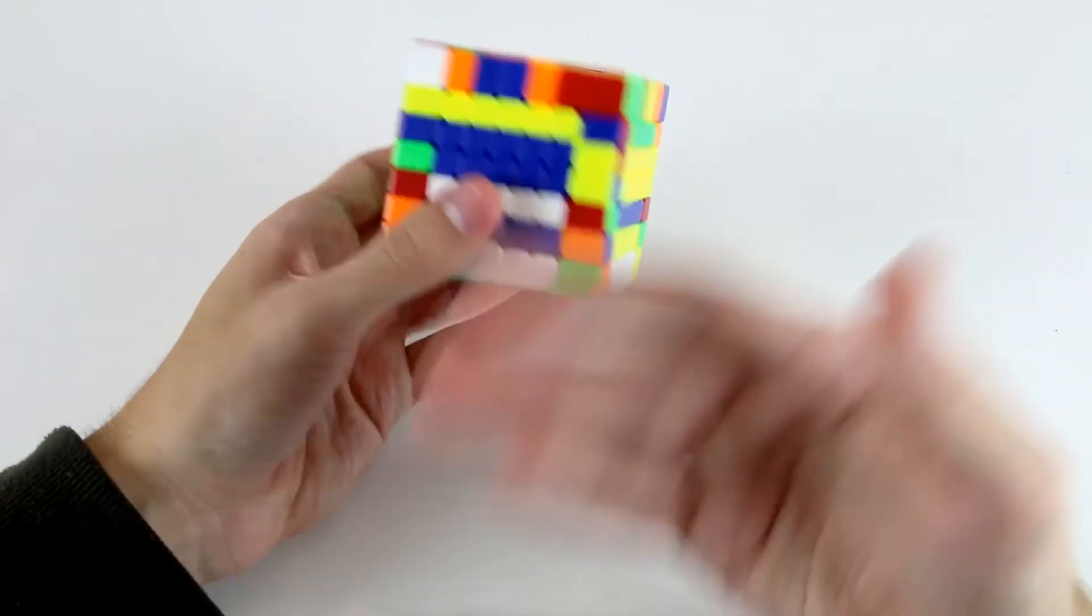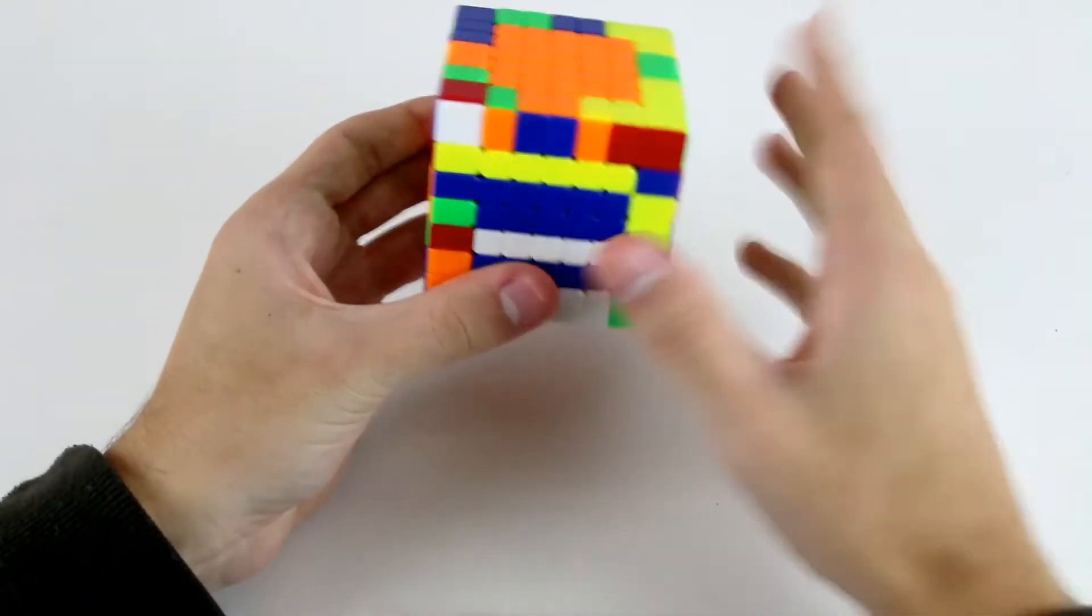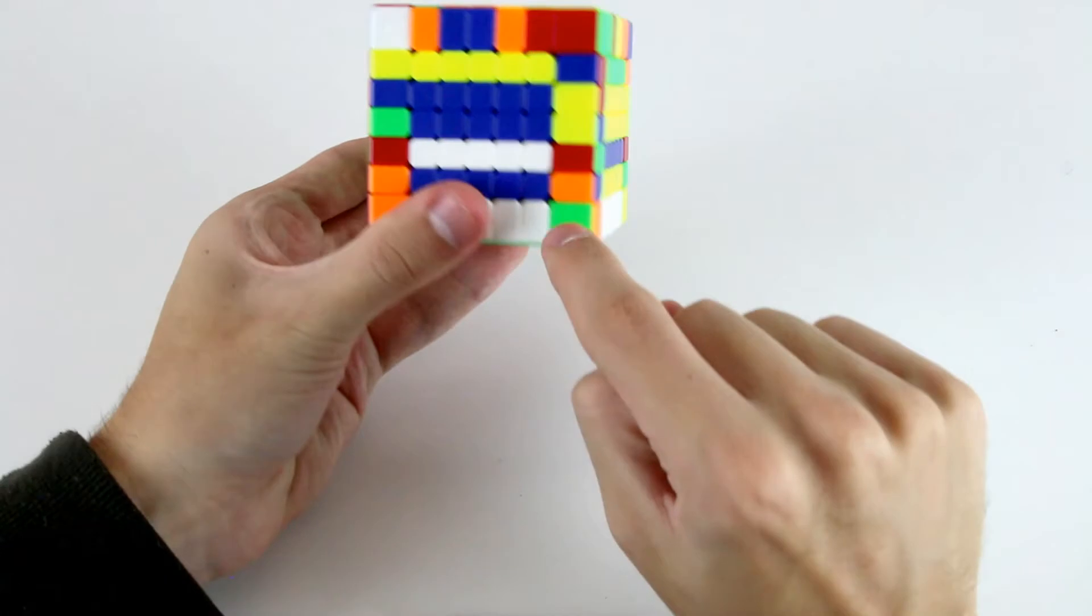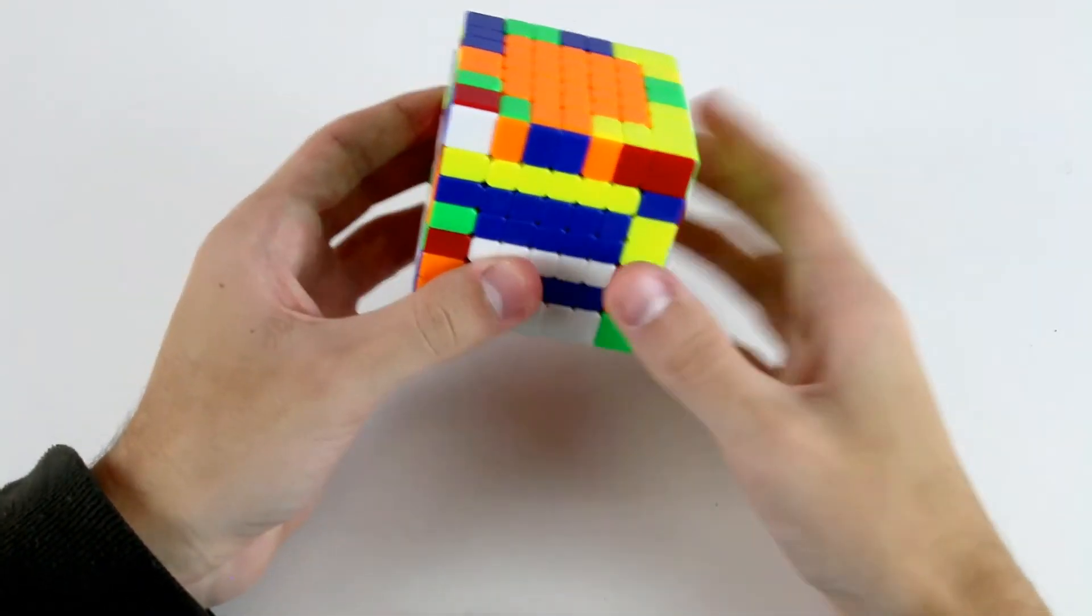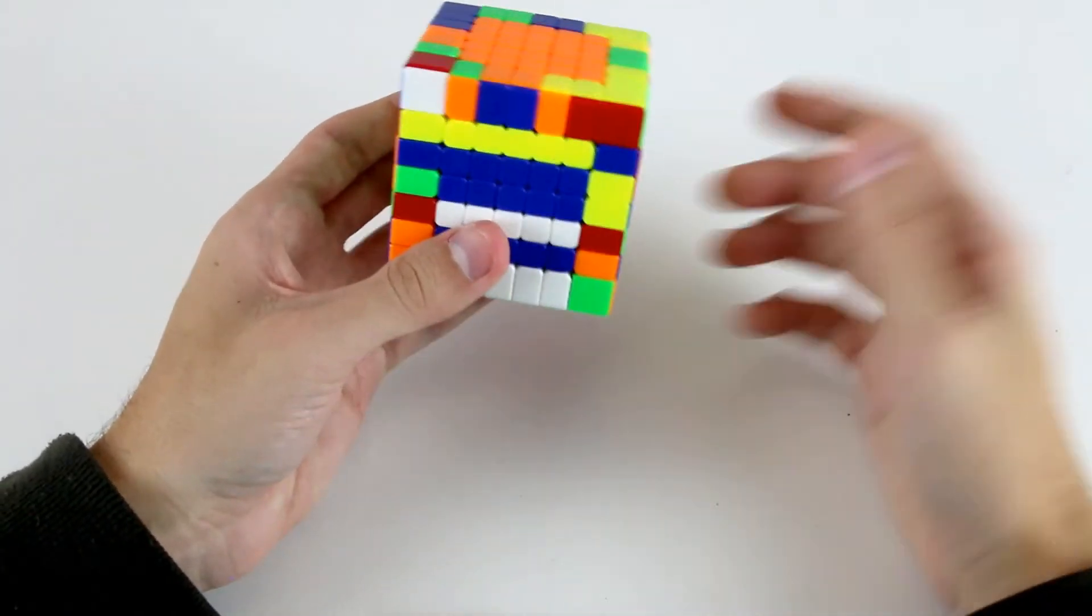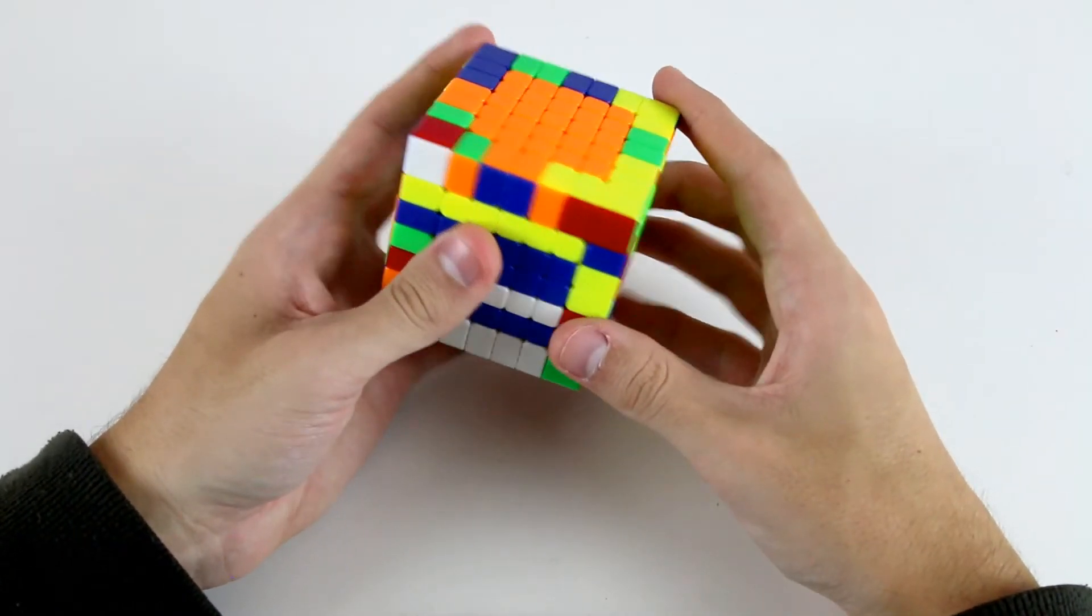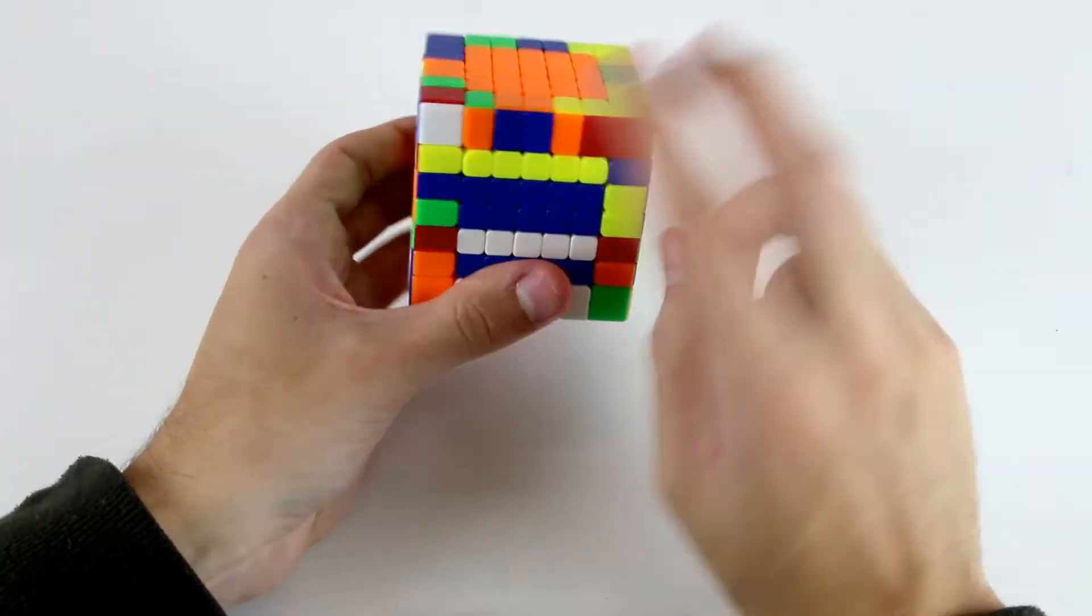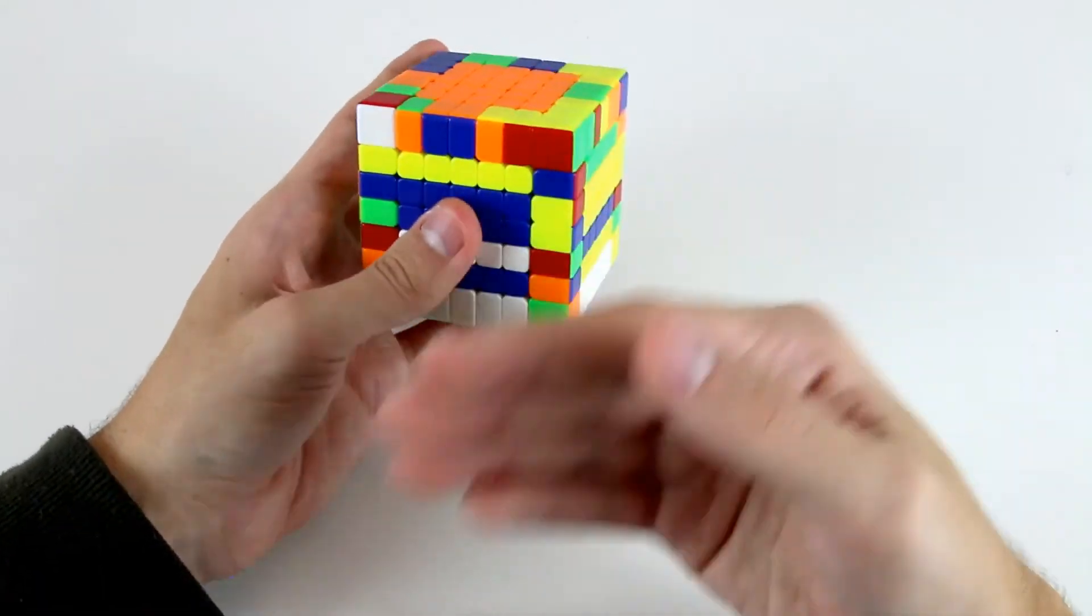What I want to do is pair them up together, and whilst I'm doing that, in order to have a fast and fluid solve, I need to be looking at other pieces around the cube whilst I'm pairing up these ones. So what I want to be able to do is get to a point where I can basically solve these five pieces blindfolded without looking. That takes practice and time to get familiar with how exactly to pair up all these pieces.